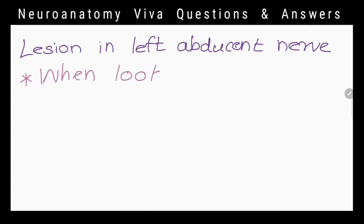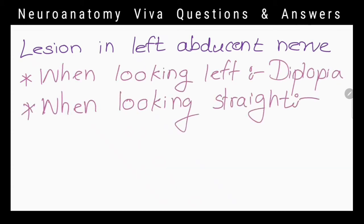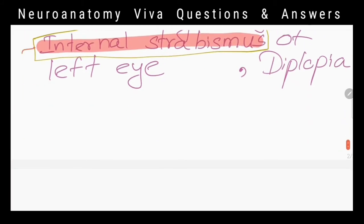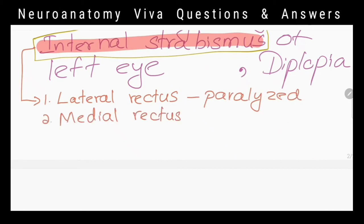What will happen when there is a lesion in left abducens nerve? Diplopia when looking left, internal strabismus of left eye and diplopia when looking straight. Why internal strabismus? As lateral rectus muscle is paralyzed, unopposed action of medial rectus pulls the eyeball medially when looking straight.